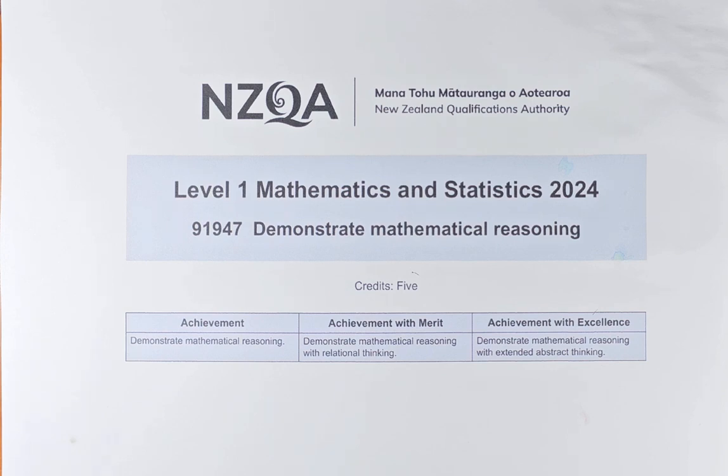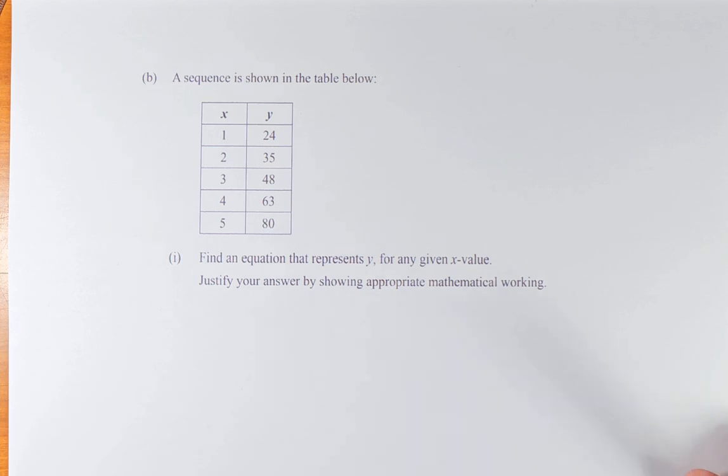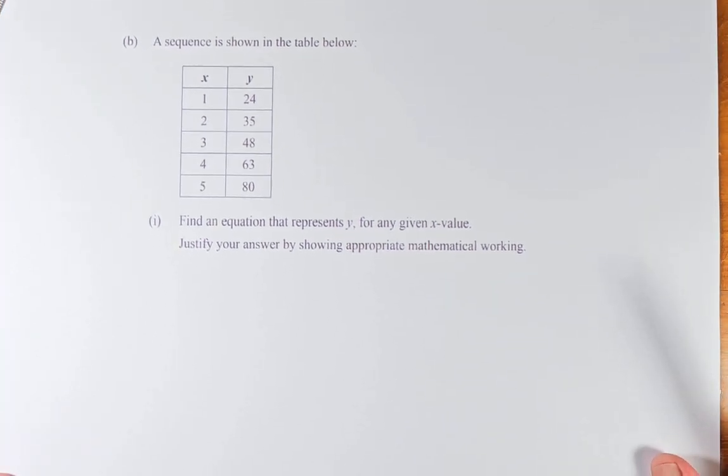Let's read the question. A sequence is shown in the table: x equals 1, 2, 3, 4, 5, and y equals 24, 35, 48, 63, and 80. Find an equation that represents y for any given x value. Justify your answer by showing appropriate mathematical reasoning.